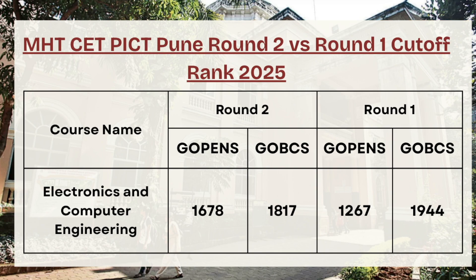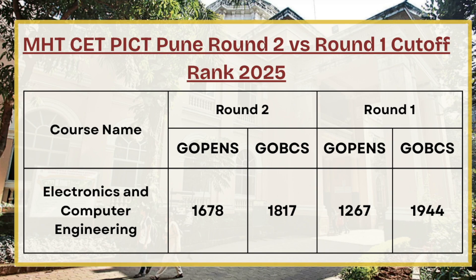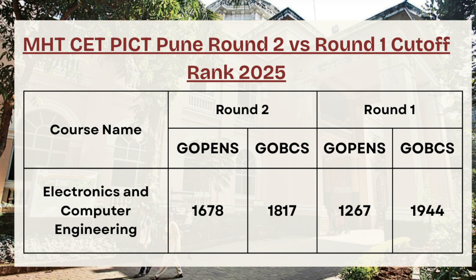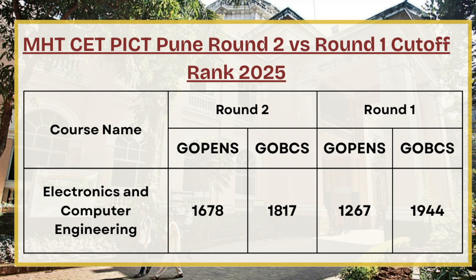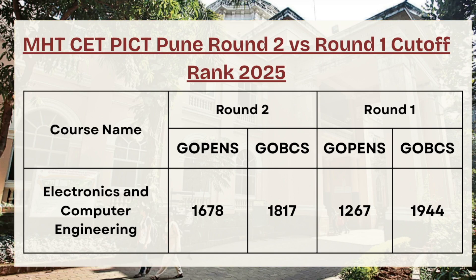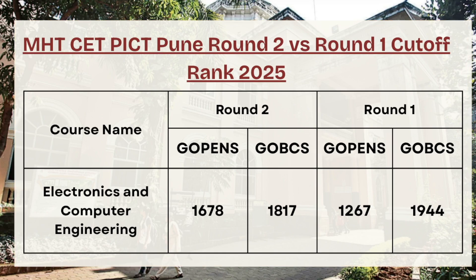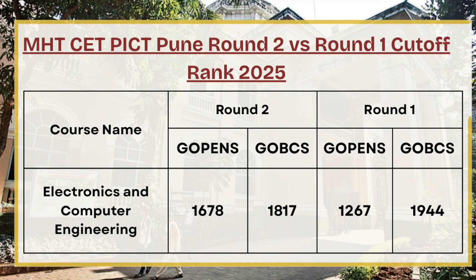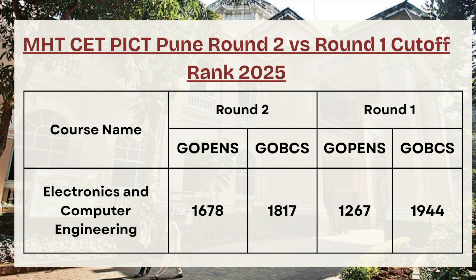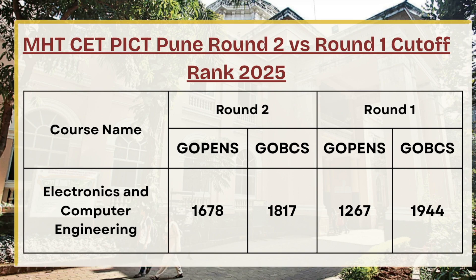For G OBC category in Electronics and Computer Engineering, the Round 2 cutoff rank was 1944 and Round 1 was 1870, so in Round 3 the cutoff can be expected between 1800 to 2000.